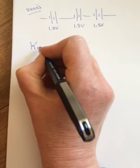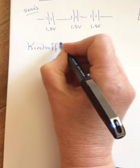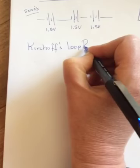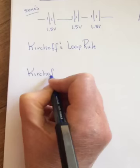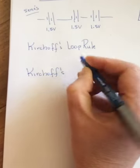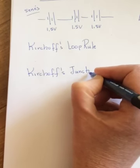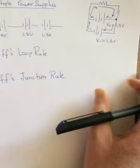One last thing is that there are two famous rules. They're called Kirchhoff's. One is Kirchhoff's loop rule and the other is Kirchhoff's junction rule. And Kirchhoff was a German physicist.